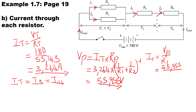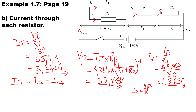I1 will be V parallel over R1 — so the volt drop across the parallel branch, 55.955 volts, divided by the value of R1, which is 30 ohms. Therefore, the current through the first resistor will be 1.865 amps. To calculate the current through the second resistor, we again use the volt drop across the parallel branch — voltage stays the same in parallel — and divide by the second resistor. The voltage in parallel is 55.955 and the value of the second resistor is 40 ohms.